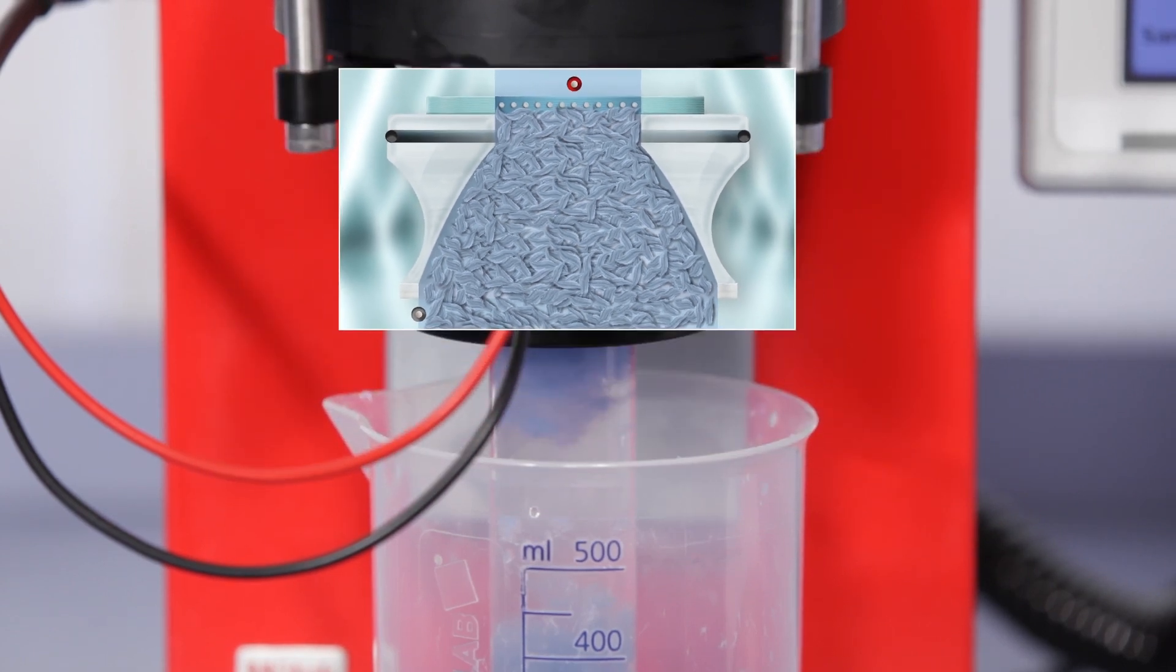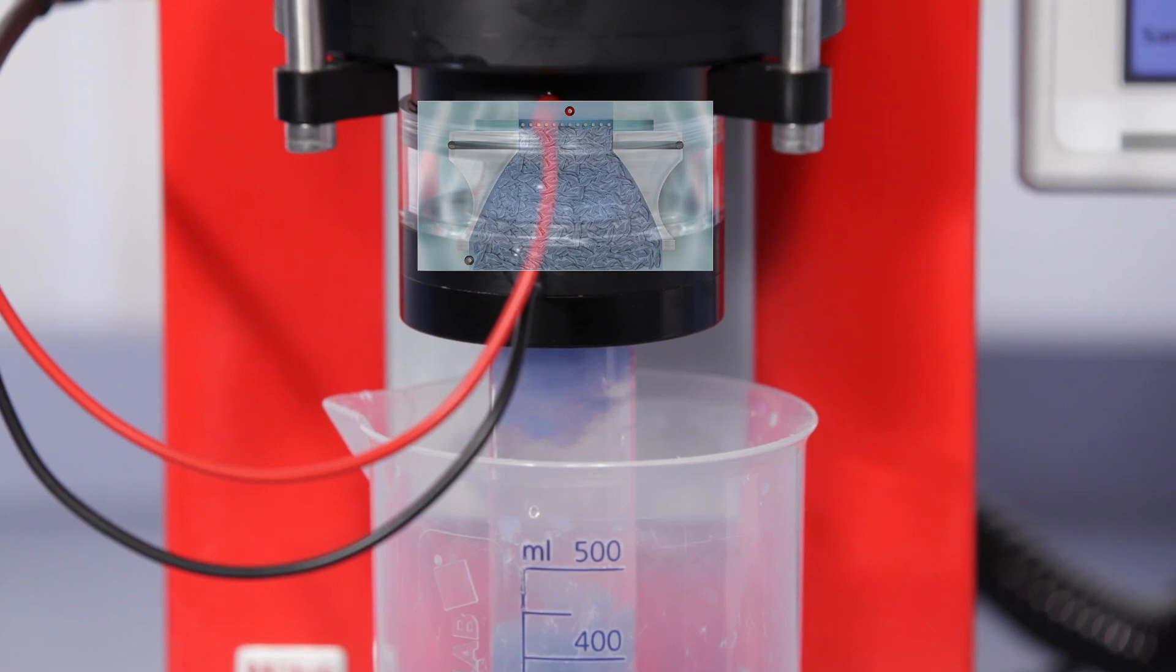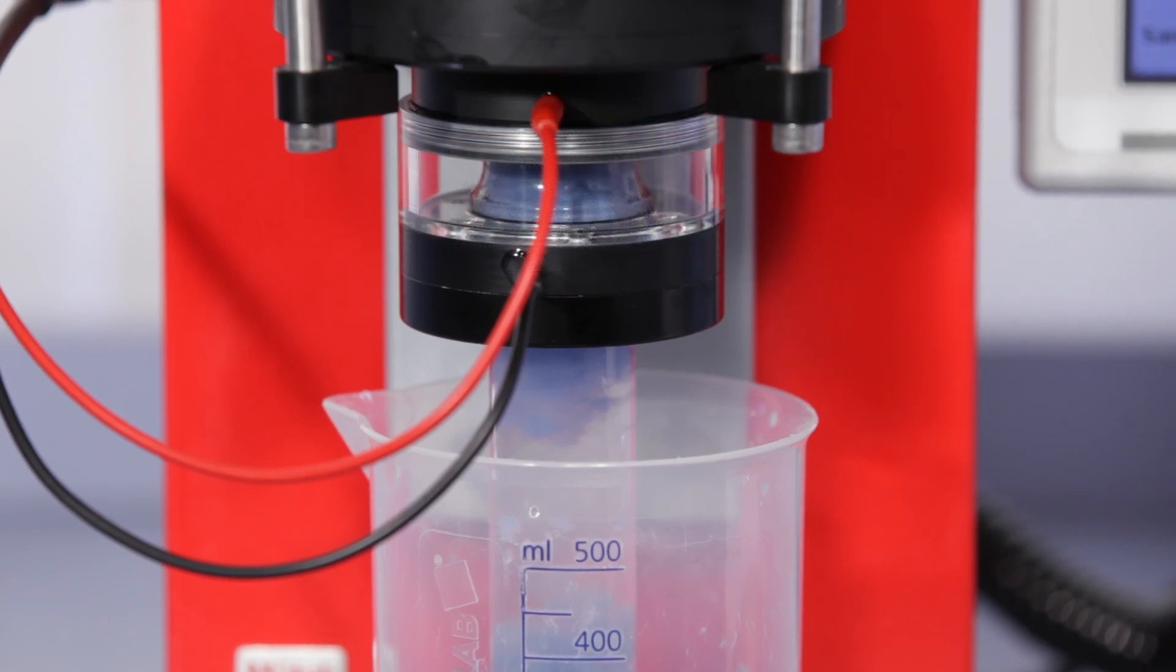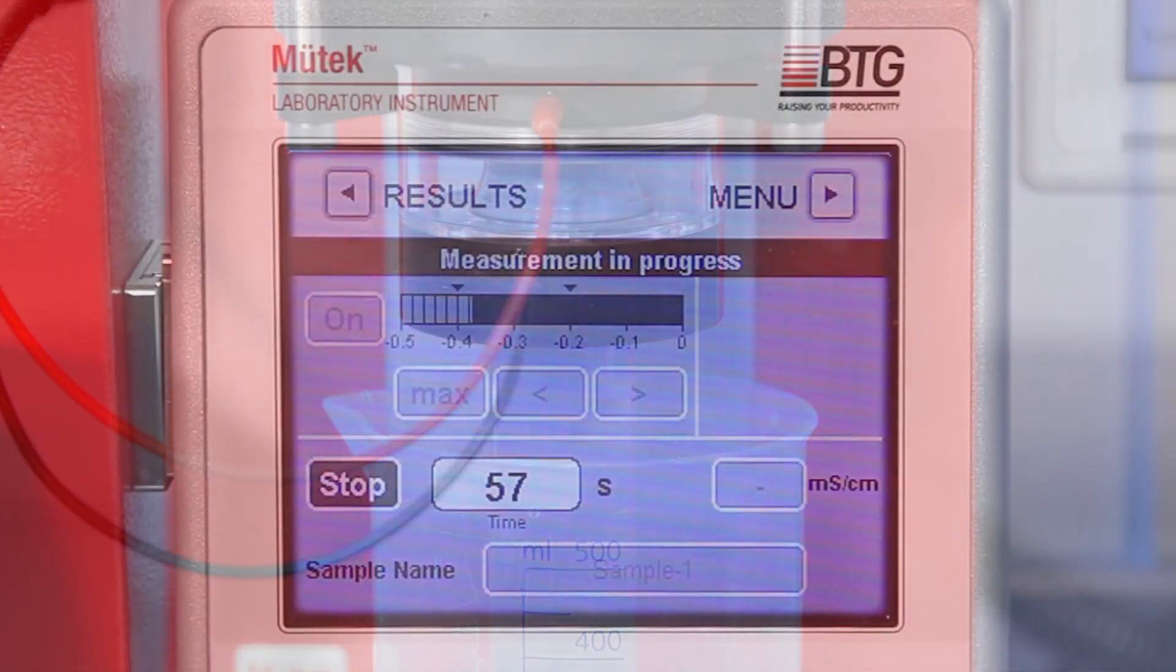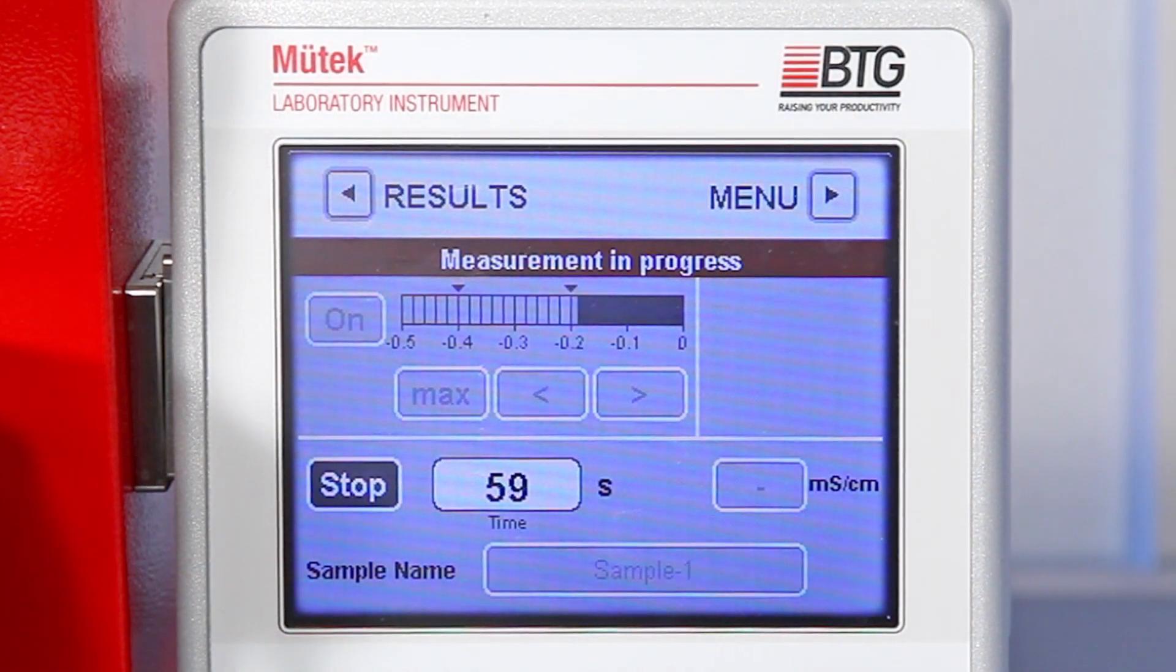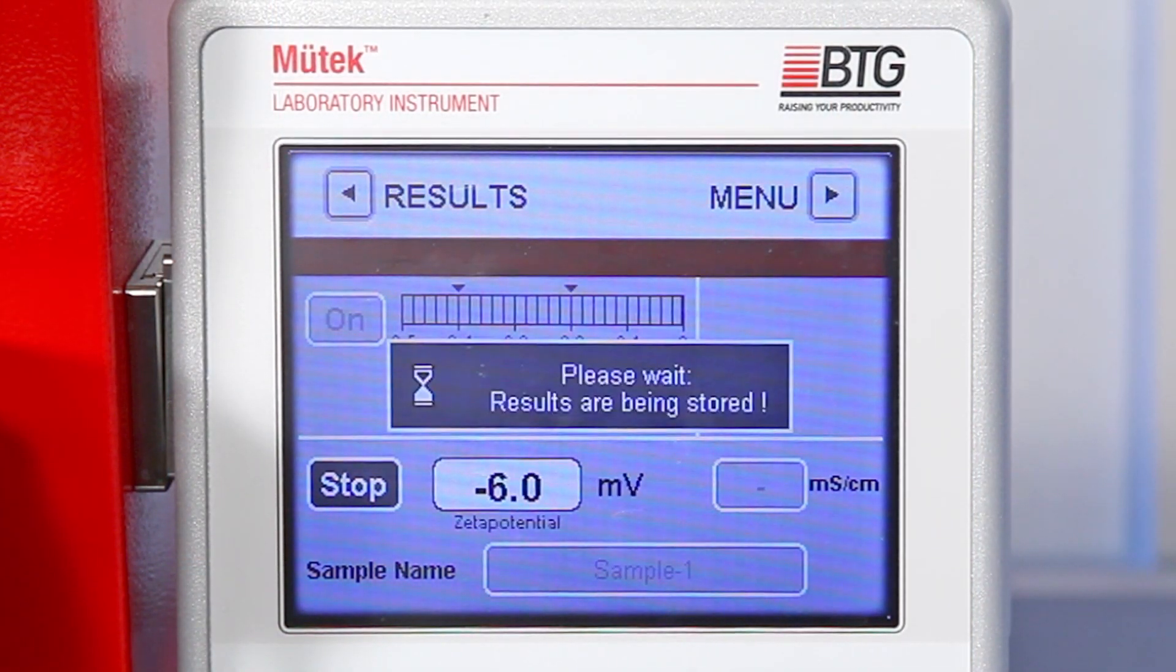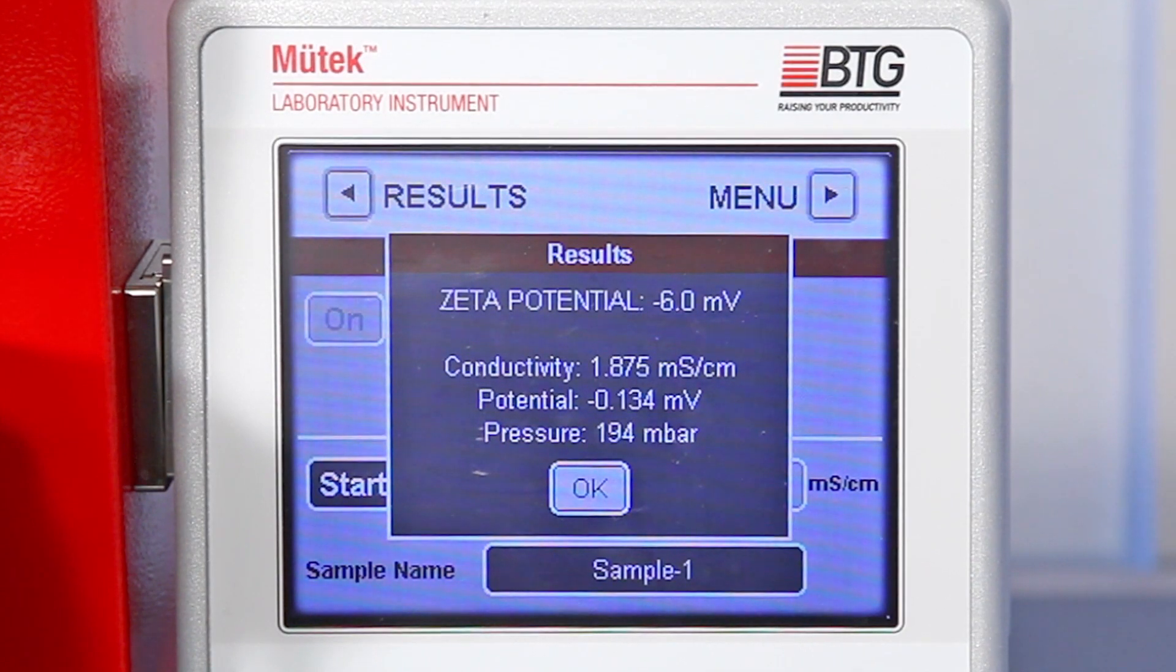Besides the streaming potential, the SZP also measures the conductivity of the sample, as well as the vacuum difference that generated the streaming potential. Out of these three values, the zeta potential is calculated.